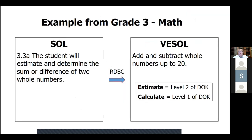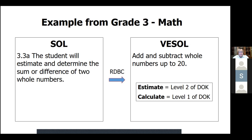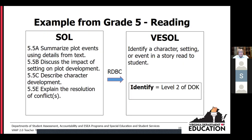Now let's look at examples comparing original SOLs and corresponding V-SOLs derived from them. On these slides you'll see verbs from the SOL and V-SOL identified with their depth of knowledge level. In general, the cognitive demand has been decreased in the V-SOL compared to the SOL. For grade three mathematics, the SOL encompassed estimating and determining the sum or difference of two whole numbers. In creating the V-SOL, our focus was confined to the basic skills of adding and subtracting with a limited range up to 20.